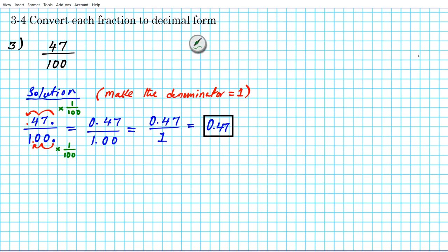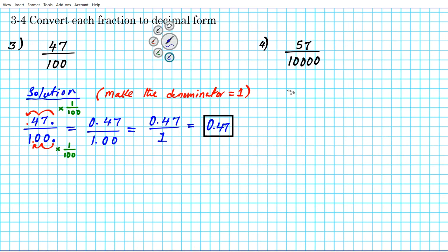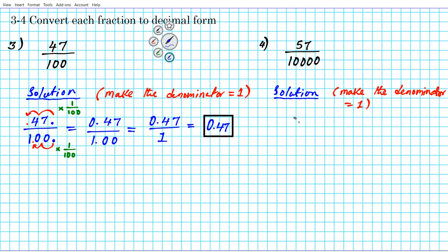Let's look at another example and then give you some practice problems. Question four: we have 57 divided by 10,000 — how do we convert this to decimal form? We follow exactly the same process as number three. The goal is to make the denominator equal to one so it drops off and we're left with the numerator as our decimal.